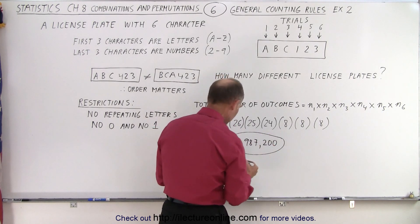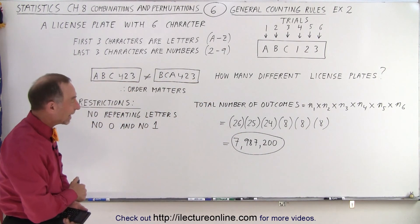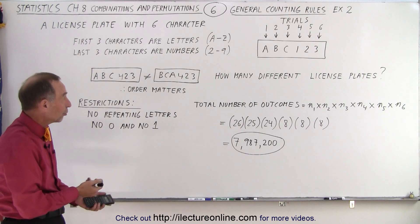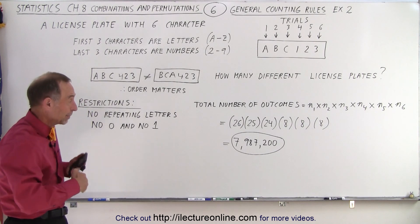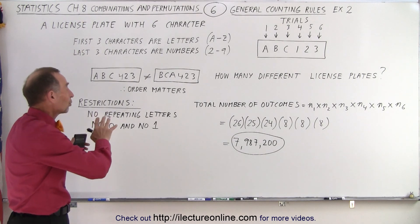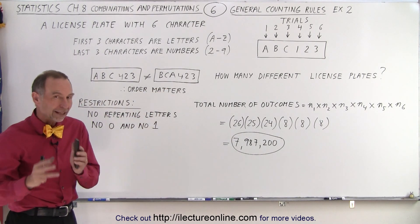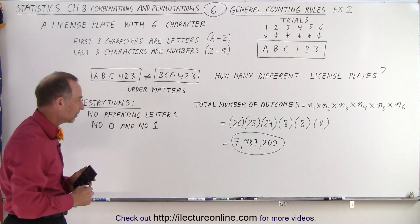Total number of outcomes has dropped from 17.5 million to just slightly less than 8 million outcomes because we have placed some restrictions on it. But again, these are the total number of permutations we can have with the restrictions. And again, we use a general counting rule, not that fancy equation we saw in the beginning of the series.